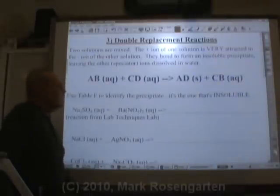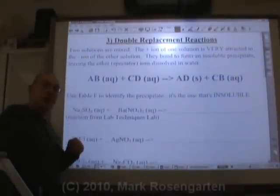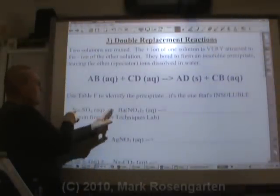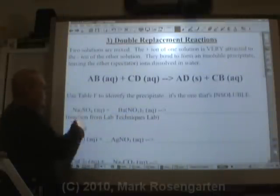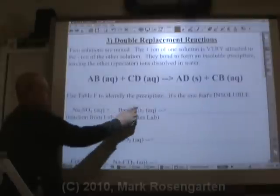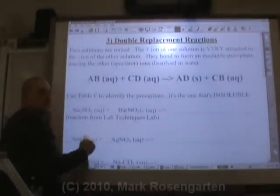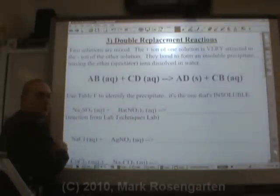In double replacement reactions, the ions are doing a little square dance. The metal ions switch off with who they're dancing with. Sodium was dancing with sulfate, now it's going to dance with nitrate. Barium was dancing with nitrate, now barium is going to dance with sulfate. It's like a big chemical square dance.